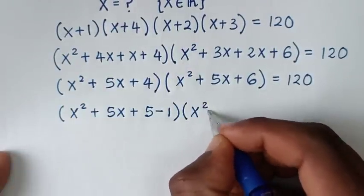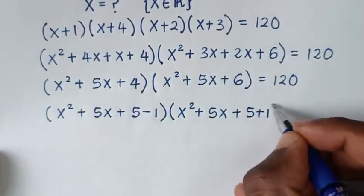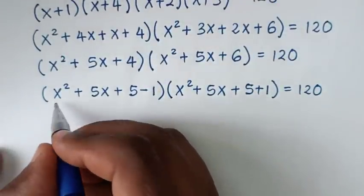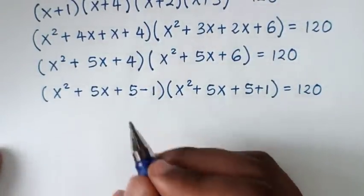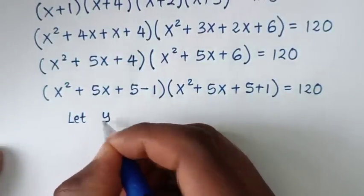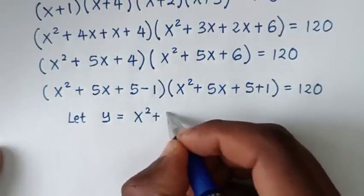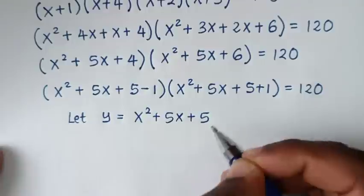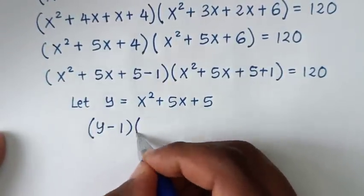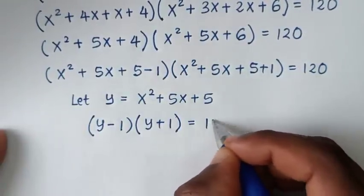(x² + 5x + 6), and 6 is the same as 5 + 1, equals 120. You can see that x² + 5x + 5 is common in both brackets. So let y = x² + 5x + 5. Our equation becomes (y − 1)(y + 1) = 120.